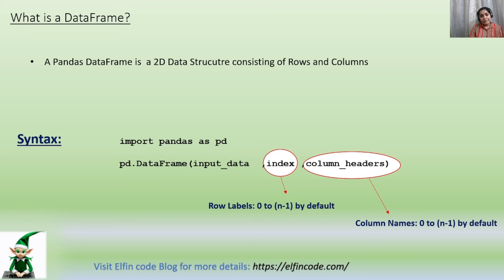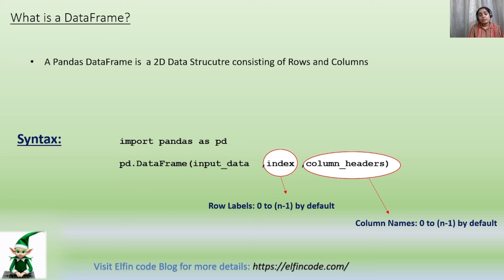Now, how to create a DataFrame? The first step is to import the pandas module by writing import pandas as pd, and then to use the DataFrame method from the pandas library by writing pd.DataFrame(input_data). We have two more parameters: index and column headers. Both are optional, and the default values of both parameters is 0 to n-1. Index is nothing but the row labels of each row, and column headers are basically the headers of each column of the DataFrame.